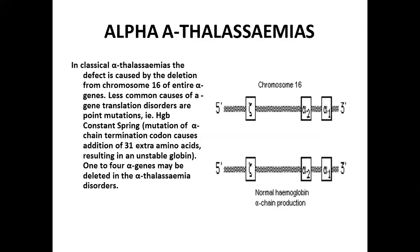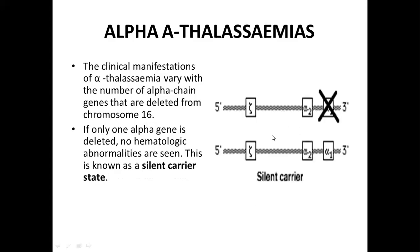One or more of the four alpha genes may be deleted in alpha thalassemia disorders. On chromosome 16 there are two alleles, each allele having alpha-1 and alpha-2 genes producing alpha globins. Alpha thalassemia is divided depending on the number of alpha chain genes deleted from chromosome 16. Clinical manifestations vary with the number of alpha genes deleted.